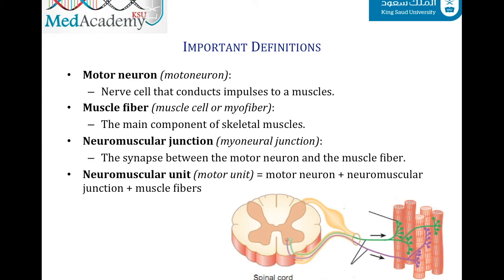The first definition is motor neuron, which is the nerve cell that delivers impulses from the brain or spinal cord to the muscle. The second definition is muscle fiber, or muscle cell, which is the main component of skeletal muscle. A neuromuscular junction is the synapse, or the area where the motor neuron and the muscle fiber meet.